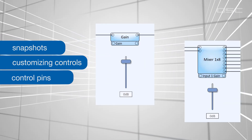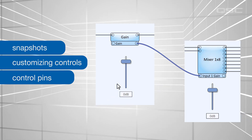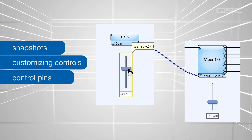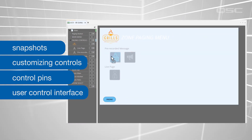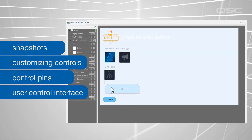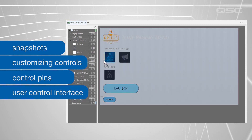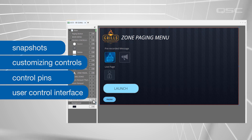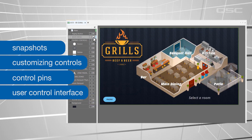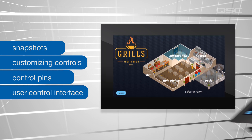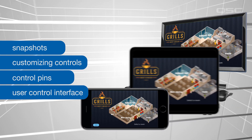Then we'll explore control pins, which allow you to connect controls together so that changing one control can have an effect on one or more other controls. Finally, we'll take a deep dive into creating the User Control Interface, or UCI — the interactive visual control that your end users will actually use to interact with the system, whether from a native Q-SYS control panel installed in the venue, or deployed remotely via a phone, PC, or tablet.